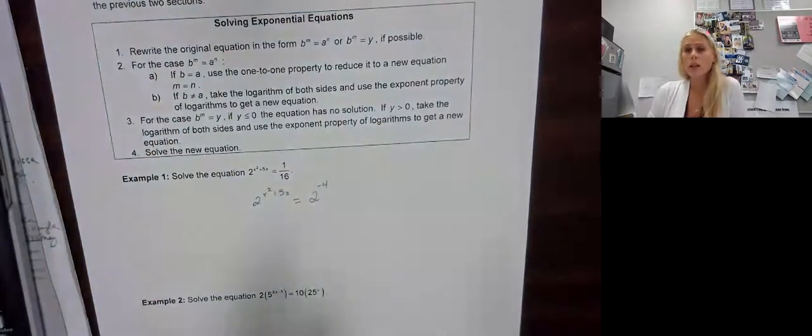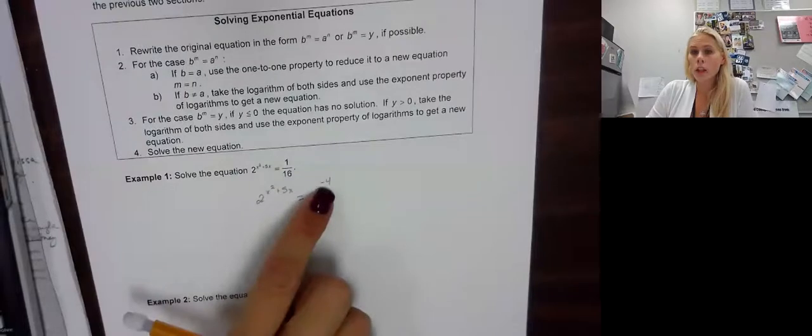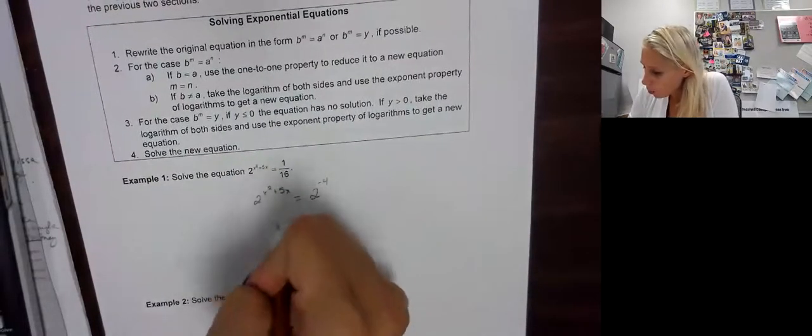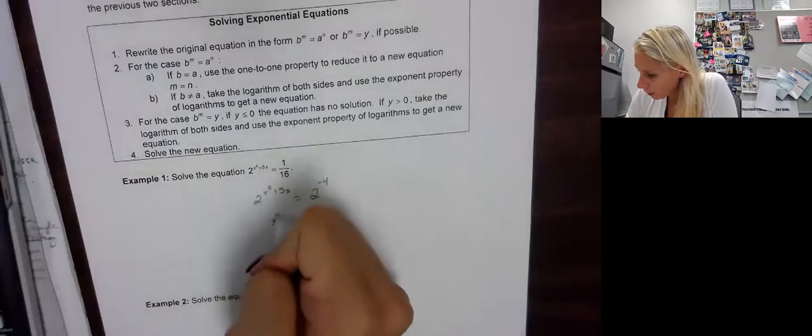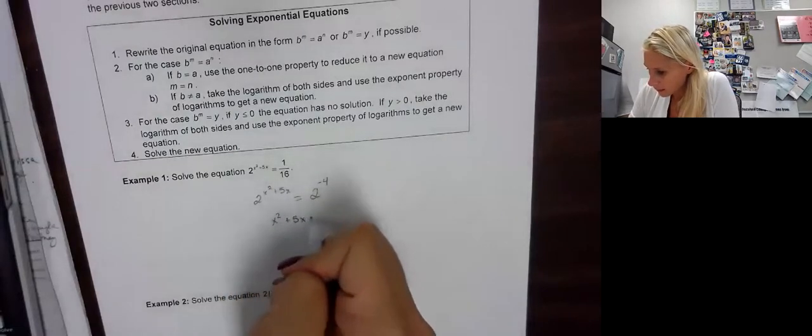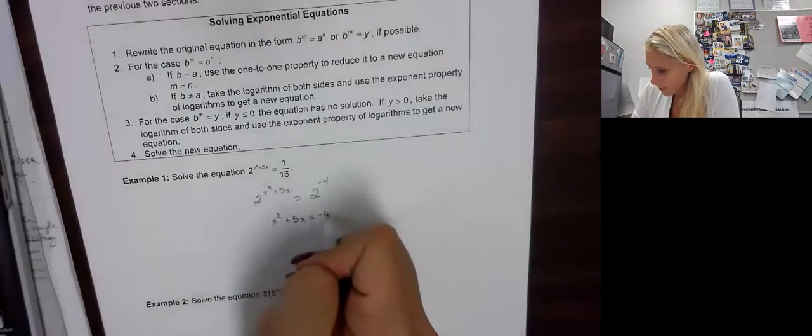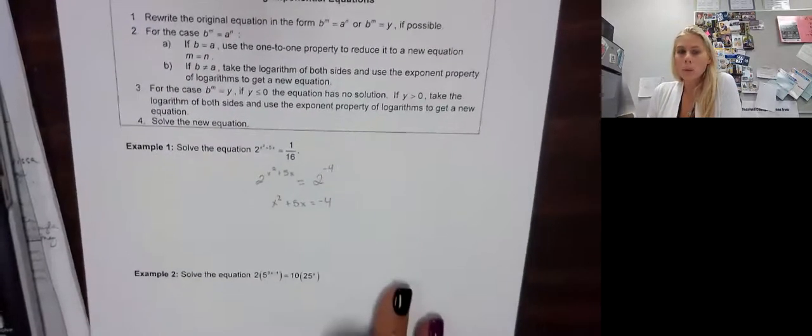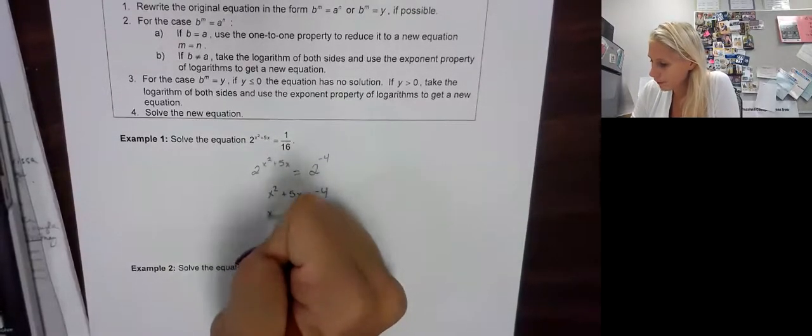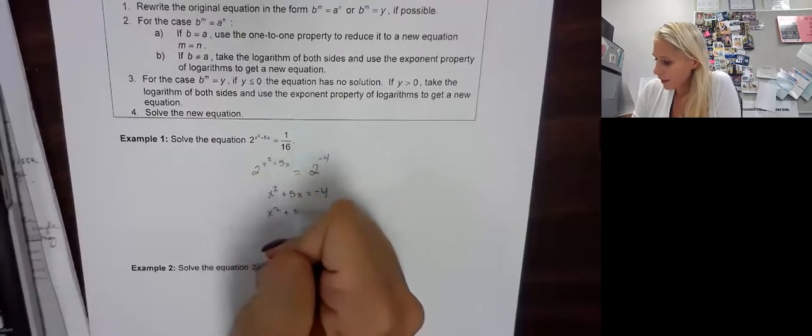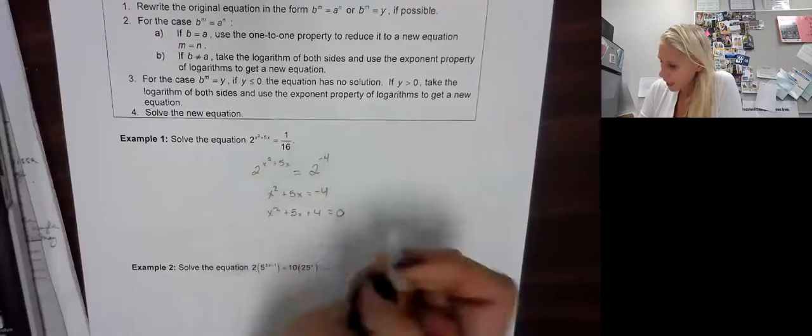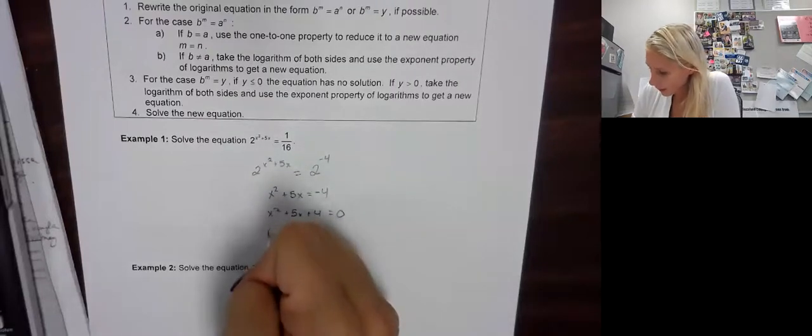This is very important. I see a lot of kids overlook that. Now that our bases are the same, we can focus on the exponent, which is x squared plus 5x equals negative 4. Now we have an x squared, so we have to think about factoring. So let's move everything over. We have x squared plus 5x plus 4 equals 0. And then we factor.